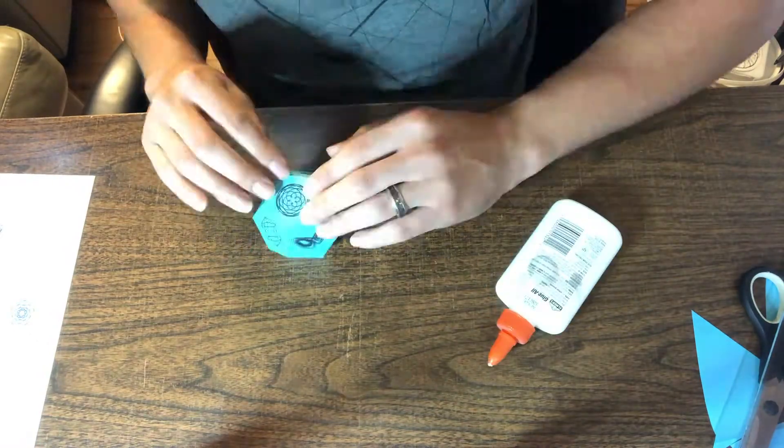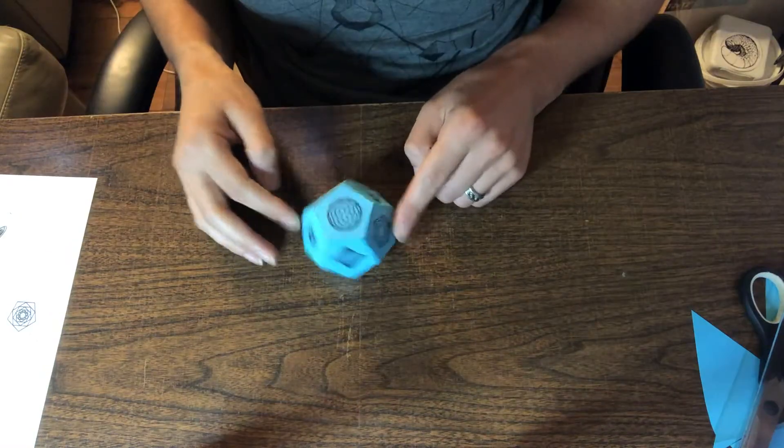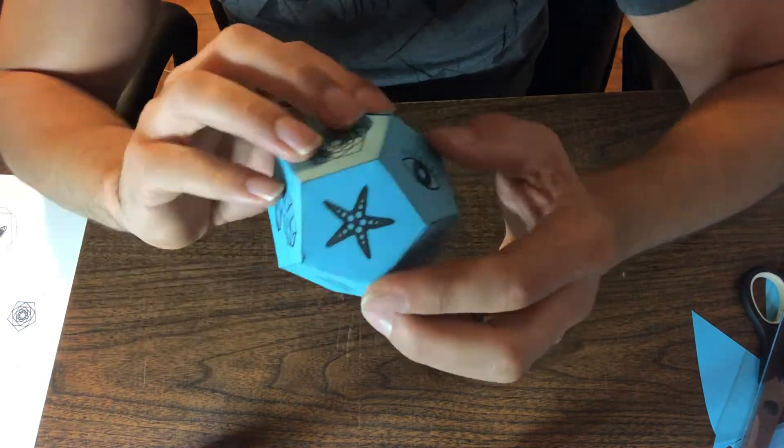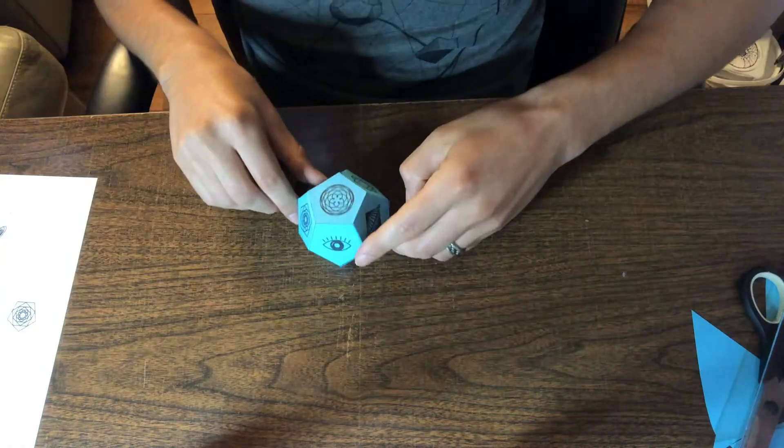But once you're done with that, then you have your own perfectly shaped 12-sided dodecahedron. You're done. Spin it.